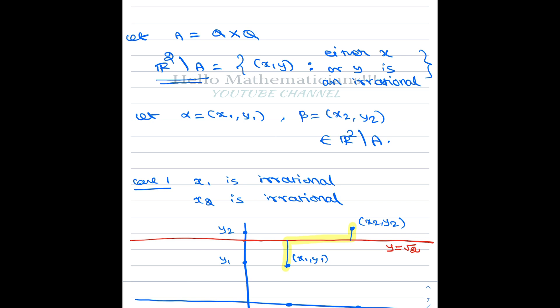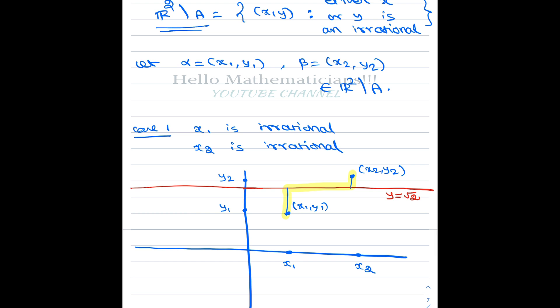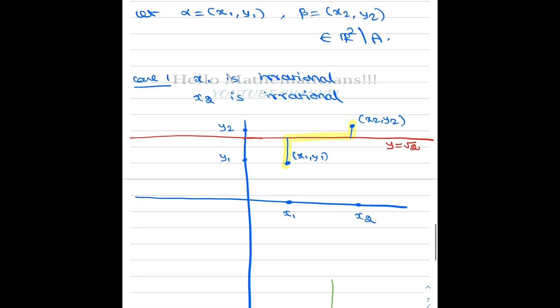We take two points alpha and beta from the complement of Q×Q and construct a path joining alpha and beta in R² minus A itself. There are four cases, but by a logical argument they can be reduced to only two cases.